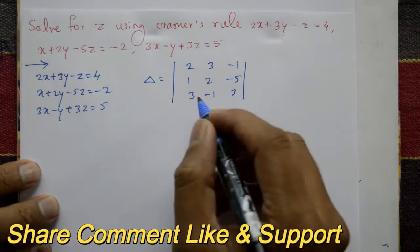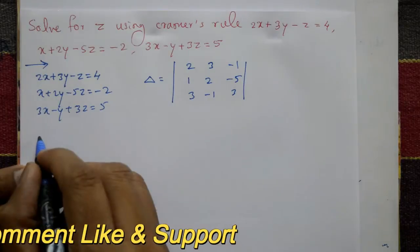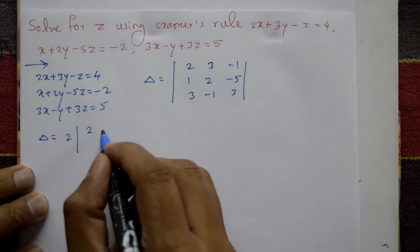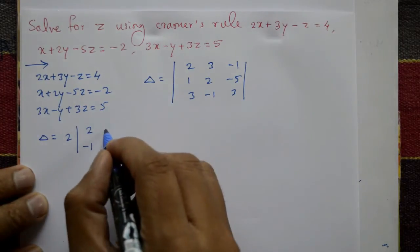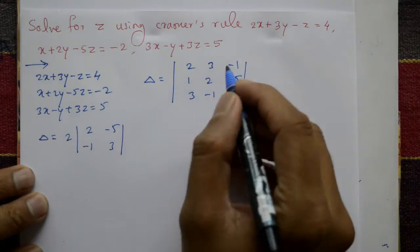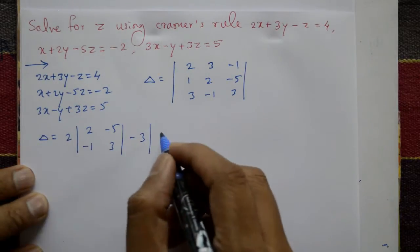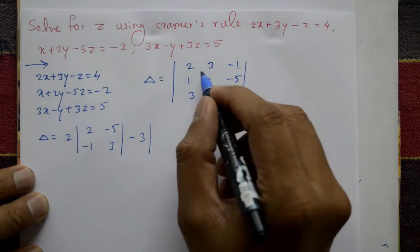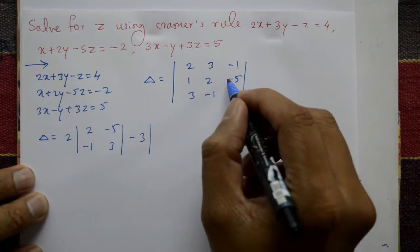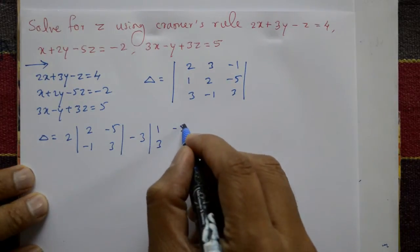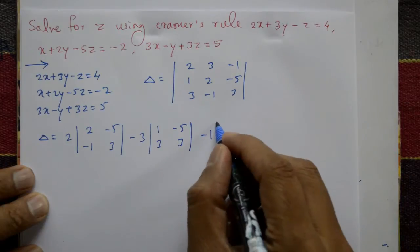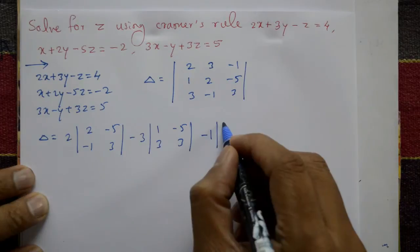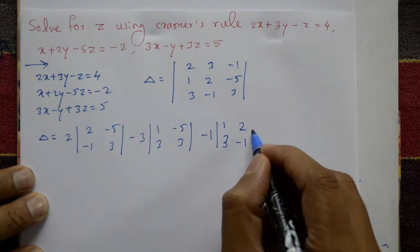Expand this determinant. Delta equals: take element 2, consider the sub-elements with signs plus minus plus. Then minus 3, take signs plus minus plus, consider the elements 1, 3, minus 5, 3 from that row and column. Next, minus 1 for the first row third column element, consider elements 1, 3, 2, minus 1.